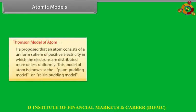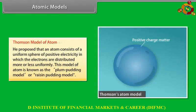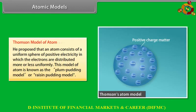Thomson model of atom: Thomson proposed that an atom consists of a uniform sphere of positive electricity in which the electrons are distributed more or less uniformly. This model is known as the plum pudding model or raisin pudding model.